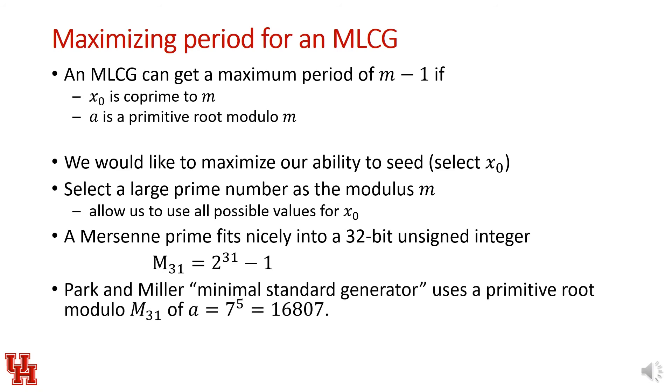There's a publication, Park and Miller, that specifies a minimal standard generator, which uses a primitive root modulo M31, and it uses 7^5, or 16807, as the multiplier, which is a primitive root modulo M31. This minimal standard generator is a commonly used version of the rand function in C.